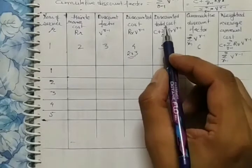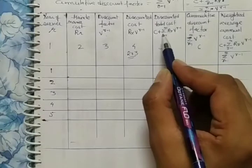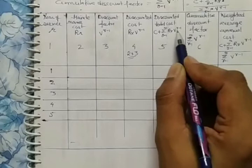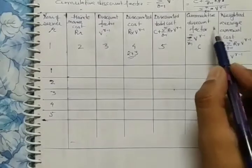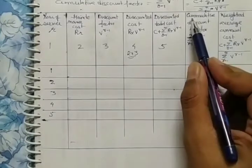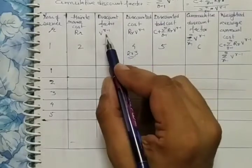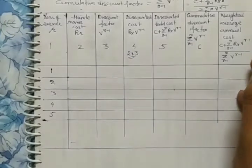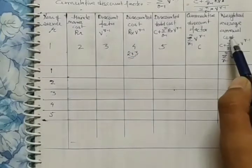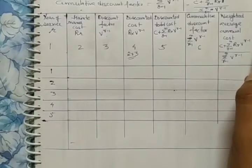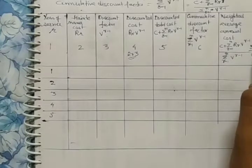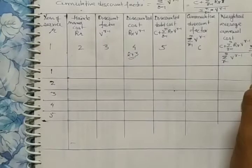The discounted total cost is the summation of discounted costs plus the capital cost. The cumulative discounted factor is the summation of the discount factor column. The weighted average annual cost is column 5 divided by column 6.